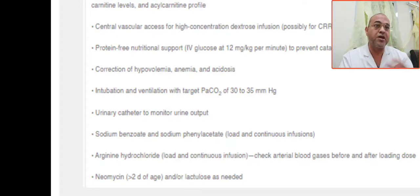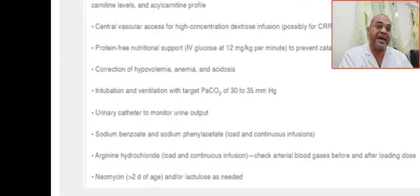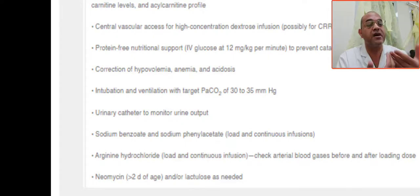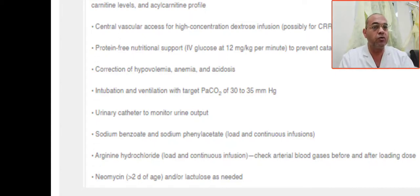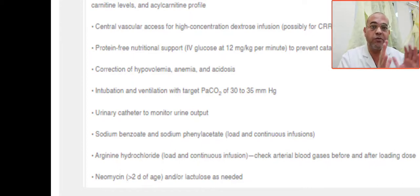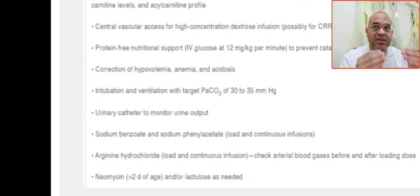Secure a central line for two reasons: we need a high glucose concentration — glucose infusion rate more than 12 mg/kg/min — and the patient may need continuous renal replacement therapy (CRRT). Provide protein-free nutritional support with high glucose to prevent a catabolic state. Correct all metabolic derangements: hypovolemia, anemia, and acidosis. Insert a urinary catheter to monitor urine output.